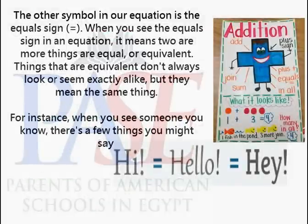The other symbol in our equation is the equals sign. When you see the equals sign in an equation, it means two or more things are equal, or equivalent. Things that are equivalent don't always look or seem exactly alike, but they mean the same thing.